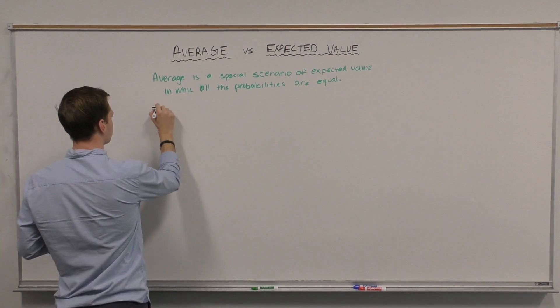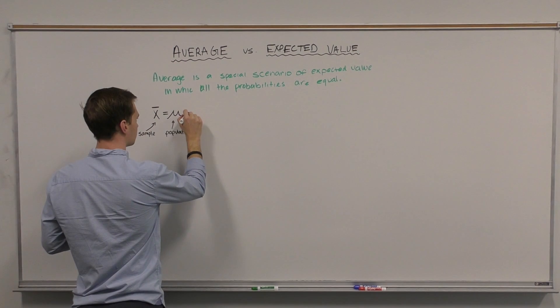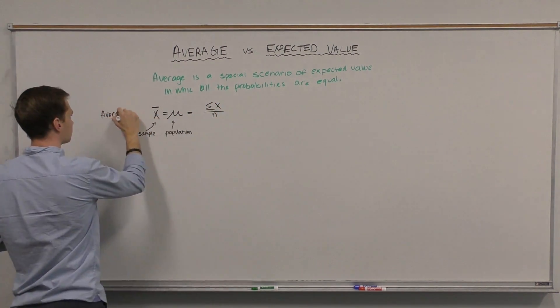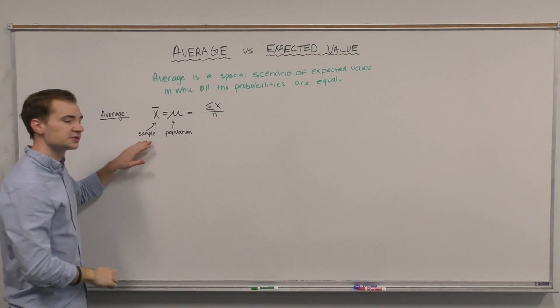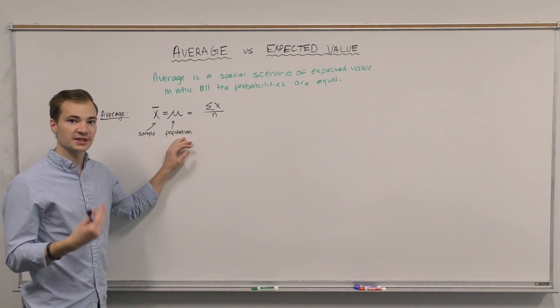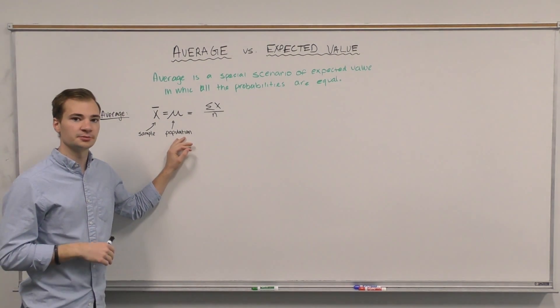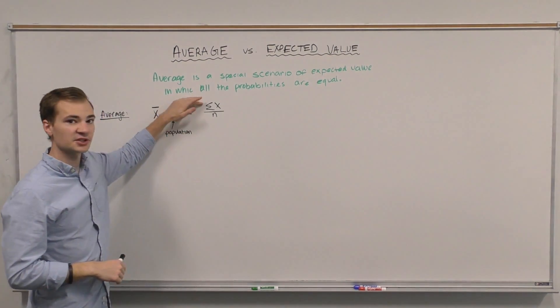Now let's get into a little bit of the math behind it. The formula for average is as this, where we use X-bar when we're talking about a discrete sample and mu to represent the average of a population as a whole.